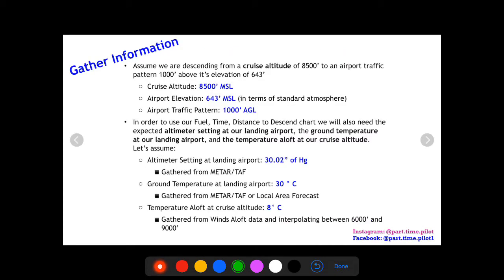Let's assume we're descending from a cruise altitude of 8,500 to an airport traffic pattern 1,000 feet above its elevation, which is 643 feet. We have our cruise altitude here, we have our airport elevation, and then we have a traffic pattern altitude 1,000 feet above it. In order to use our fuel time distance to descend chart, we also need to get the altimeter setting at our landing airport, the ground temperature at our landing airport, and the temperature aloft at our cruise altitude.